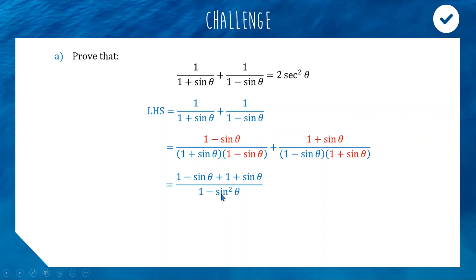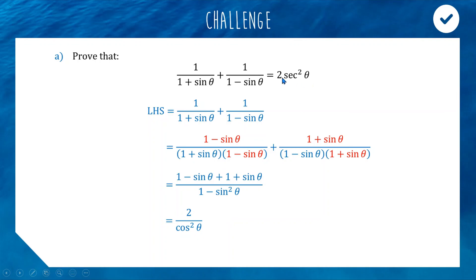On the bottom, 1 − sin²θ equals cos²θ by the Pythagorean identity. So we have 2/cos²θ. Since sec = 1/cos, we can write this as 2sec²θ, which is the right-hand side. As required — proven!